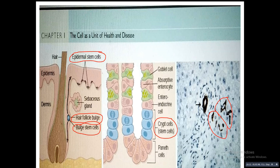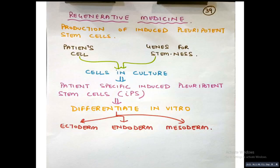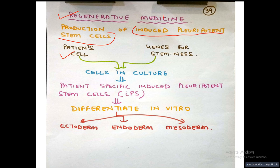There is something called regenerative medicine, which involves the production of induced pluripotent stem cells. The patient's cells and the genes for stemness — genes that give the property of stem cells — are mixed and kept in culture. What happens is the patient's cells are induced to form pluripotent stem cells, called patient-specific induced pluripotent stem cells.